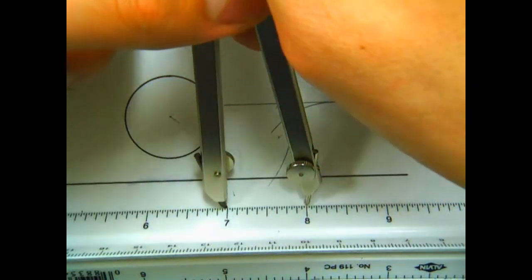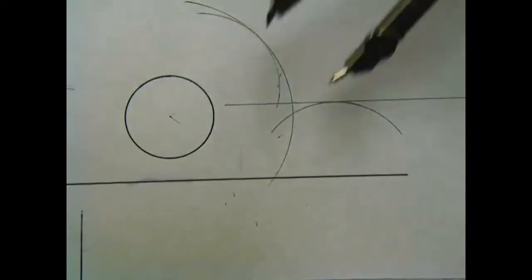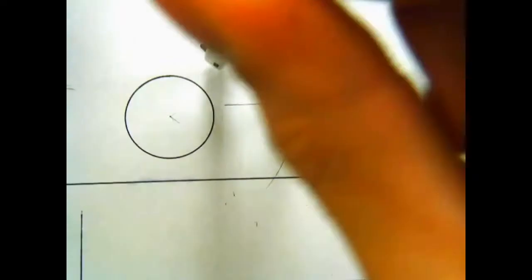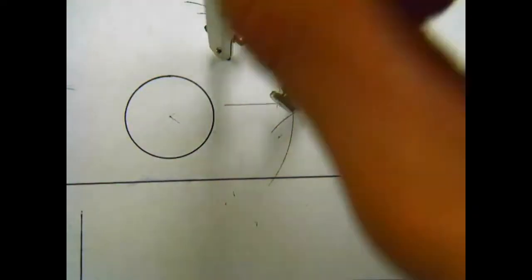So we set our compass to our desired radius again because we had changed it, go to the intersection point, and then swing the arc.